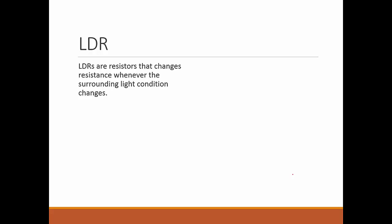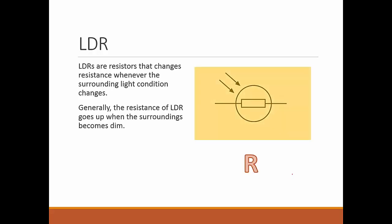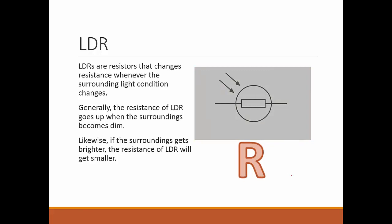LDR is simply resistors that change resistance whenever the surrounding light condition changes. This is the symbol for it. Generally, the resistance of LDR goes up when the surrounding environment becomes dimmer. So if it becomes dimmer, the R becomes larger. Likewise, if the surrounding environment gets brighter, the resistance of the LDR will get smaller. Or if it gets even brighter, it will become even smaller. That's the general trend.